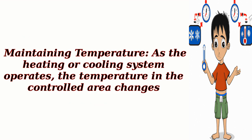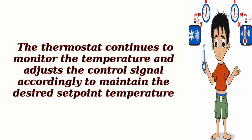Maintaining temperature: As the heating or cooling system operates, the temperature in the controlled area changes. The thermostat continues to monitor the temperature and adjusts the control signal accordingly to maintain the desired setpoint temperature.